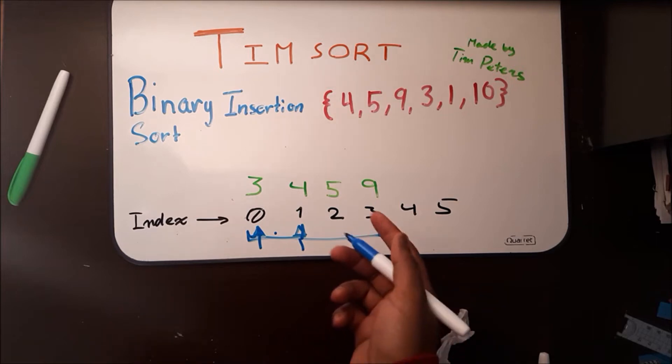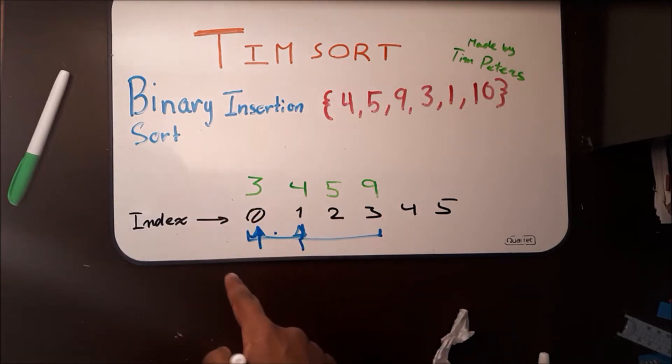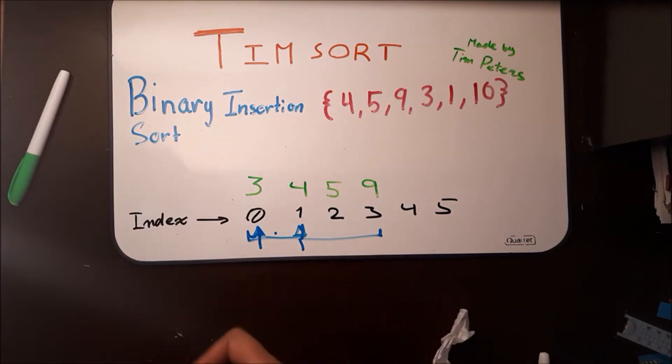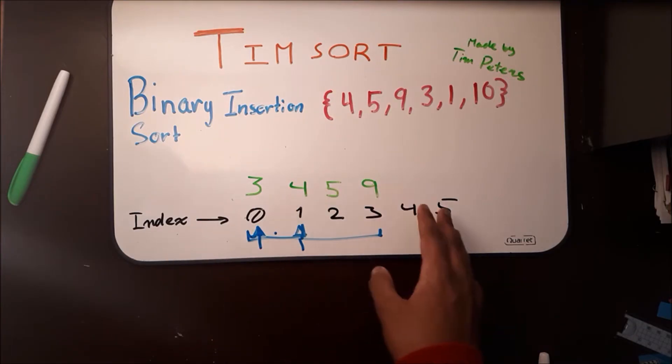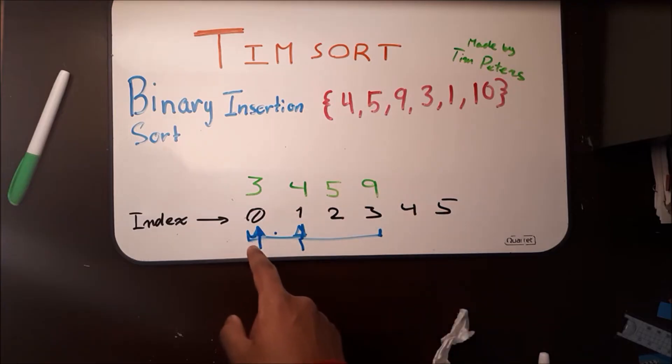And we can see once again that 1 belongs to the left of 3, but we've run out of array. So we're going to have to move all these values to the right and place 1 at index 0.